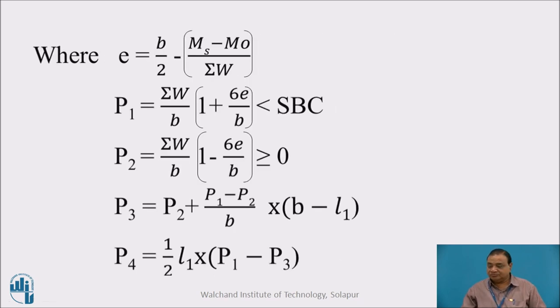Where E is eccentricity, E equals B by 2 minus (ΣMs - ΣMo) / ΣW. Ms is the stabilizing moment, Mo is the overturning moment, and the algebraic sum divided by the downward weight gives eccentricity. P1 equals ΣW/B × (1 + 6e/b), this should be less than SBC of soil. P2 equals ΣW/B × (1 - 6e/b), this should be greater than or equal to 0. P3 is P2 plus (P1 - P2)/b × (b - L1). P4 is half L1 × (P1 - P3), the area of the triangular diagram.